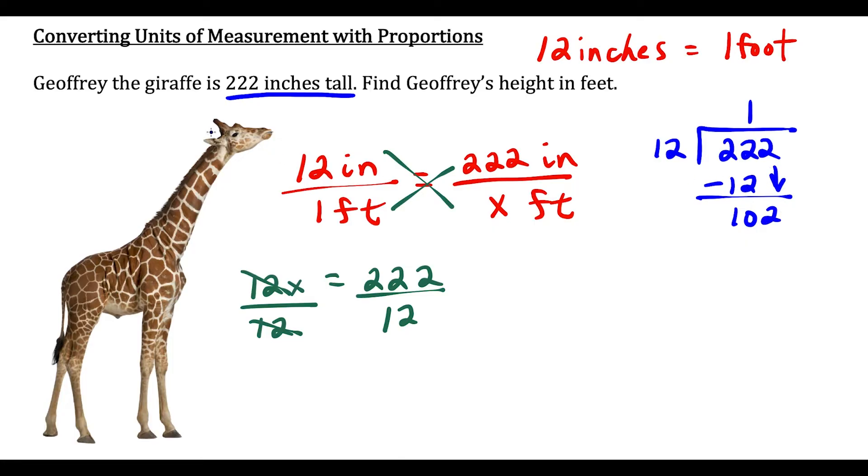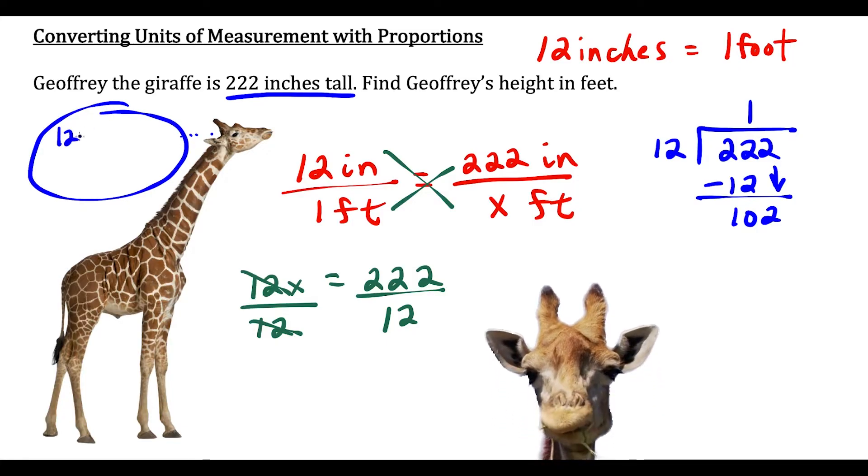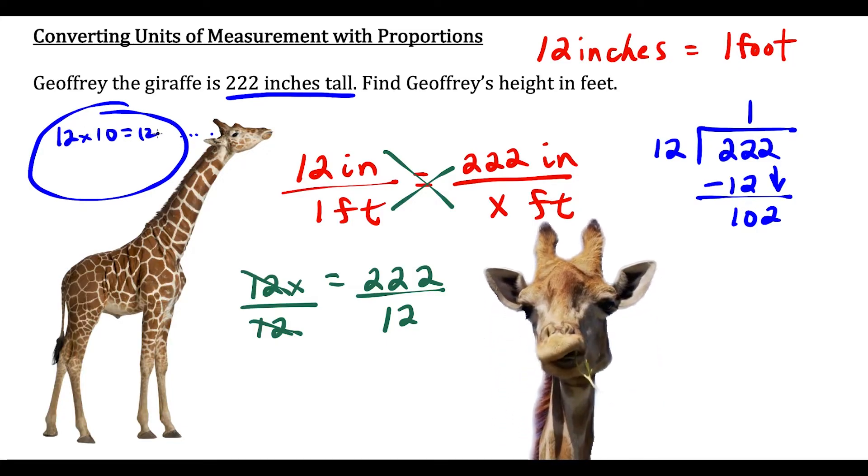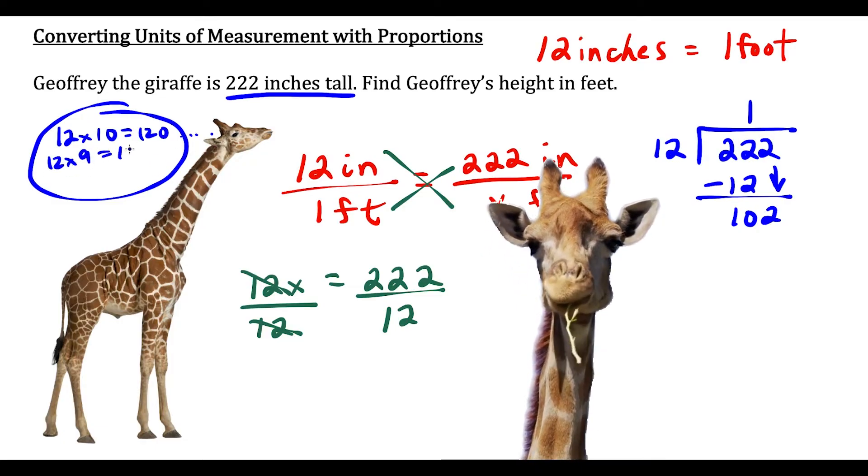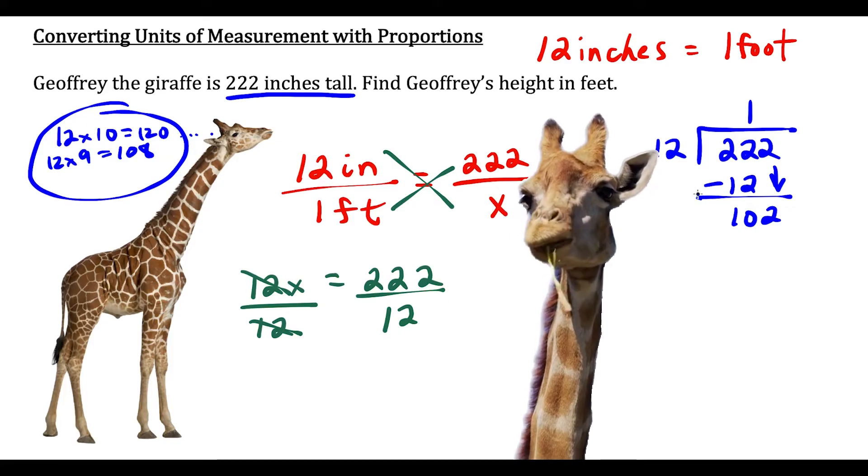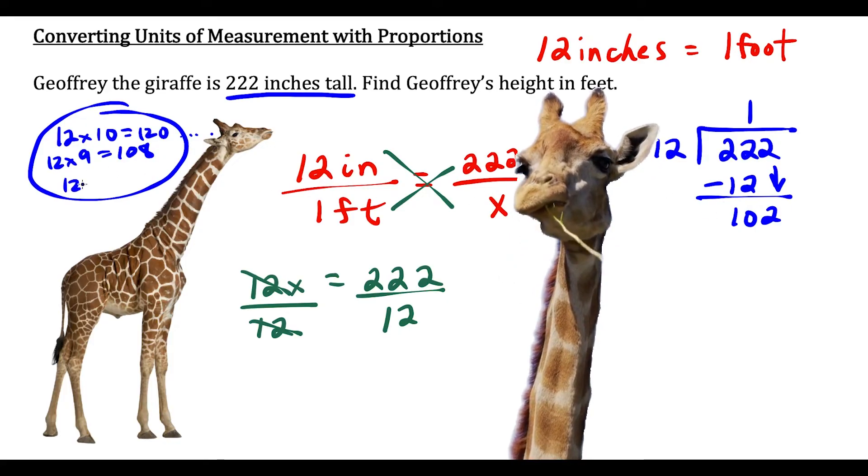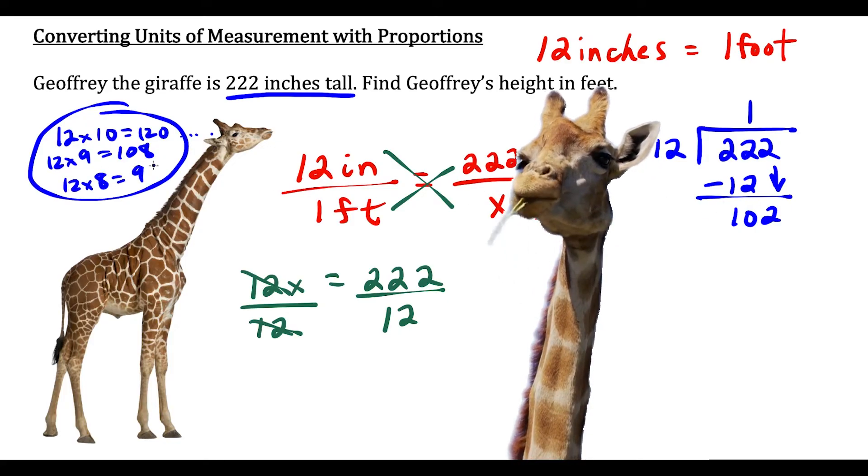This part might get a little tricky. If we look at 12 times 10 that's 120, but we need to get to 102, so this is too far. 12 times 9 is 108, still too much. But if we go back one more, 12 times 8 is 96. So that's the one.